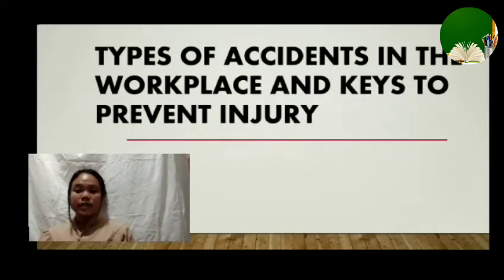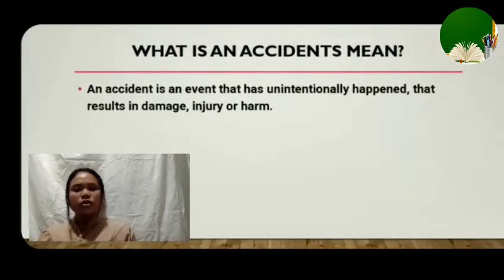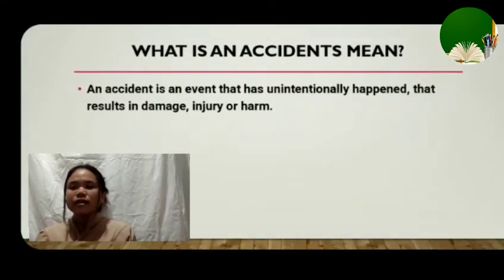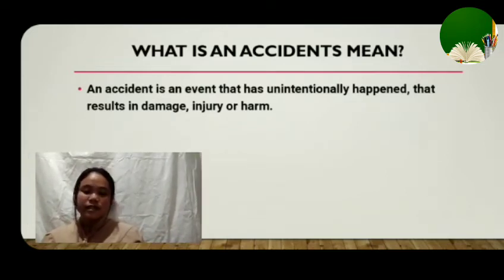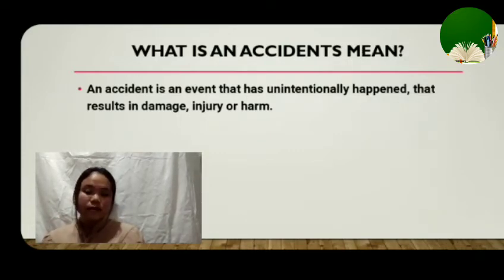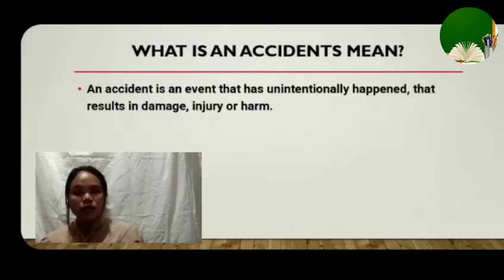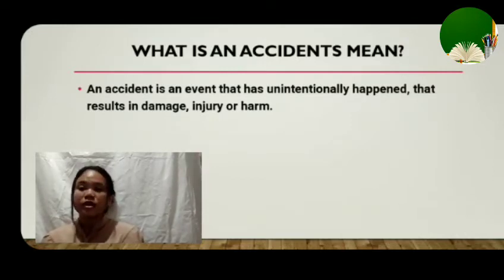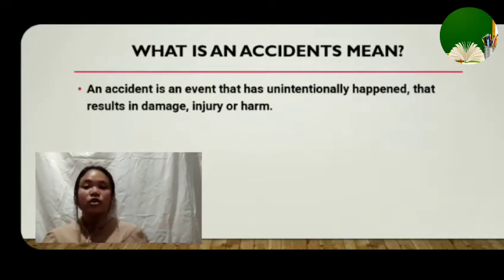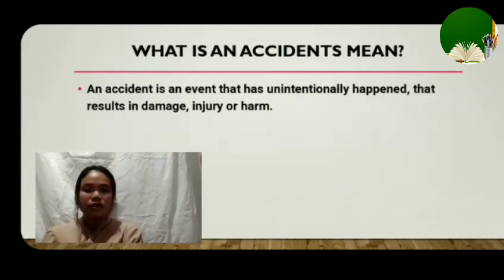Topic number one is the types of accidents in the workplace and ways to prevent injury. An accident is an event that has unintentionally happened that results in damage, injury, or harm. For example, you are just walking outside and accidentally you fall or slip on the ground — that is an accident.